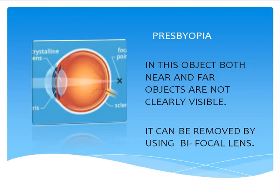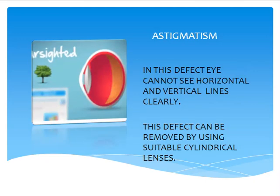In this defect, the person cannot see horizontal and vertical lines clearly. We have talked about near and far objects both not being clearly visible. We call this defect astigmatism.